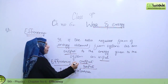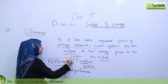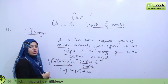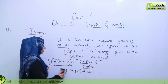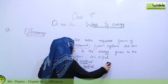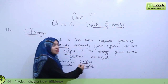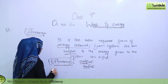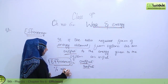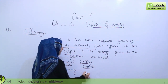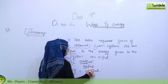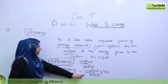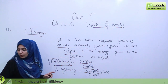If output is good, it means efficiency is more. If output is not good, it means efficiency is less. Now, if we have to find out percentage efficiency, what we do is: whatever ratio comes, we multiply it by 100. After multiplying by 100, the efficiency will be in the form of percentage.